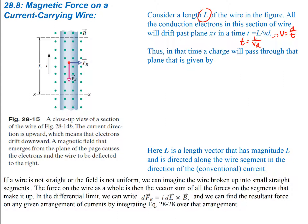Thus, in that time, a charge Q will pass through that plane. The total amount of charge is simply Q equals current times time. Our time was given as the length divided by the drift velocity. So that means we can now find what the force on this wire is going to be.